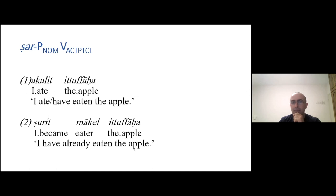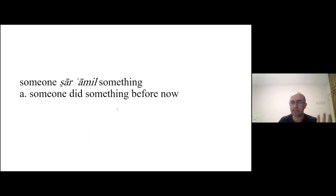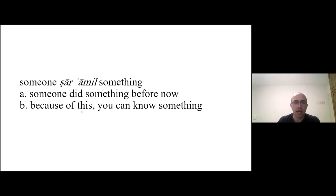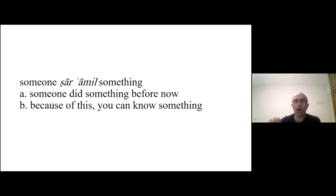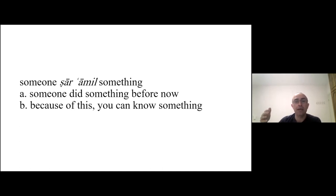Like in English, 'I have already eaten the apple' cannot be followed by a time expression. Similarly, 'sarat nakel' in Jewish Arabic cannot be followed by a time expression, while 'akalte' can take 'birah' — 'I ate the apple yesterday.' The explication for this construction is: someone did something before now; because of this, you can know something. Whenever we use the present perfect simple in English or its Arabic equivalent, we refer to the present — the addressee can infer something. For example, if I say 'I have watched that movie many times,' you can know that I like it a lot.